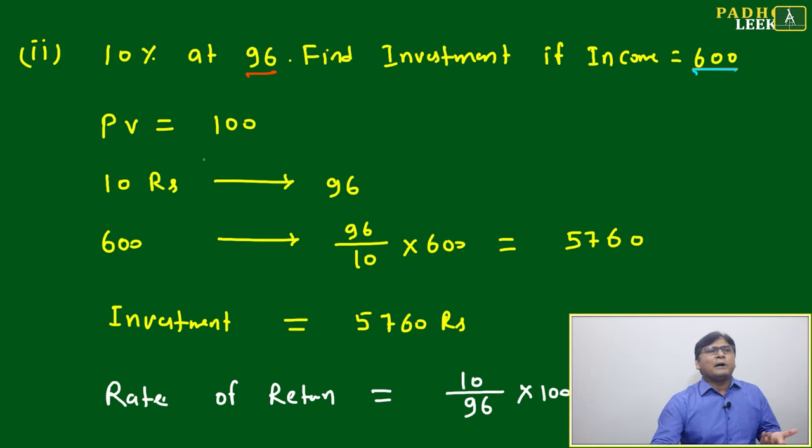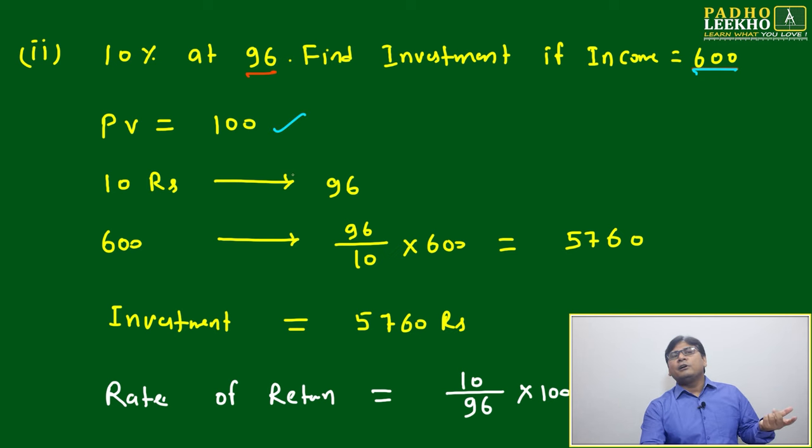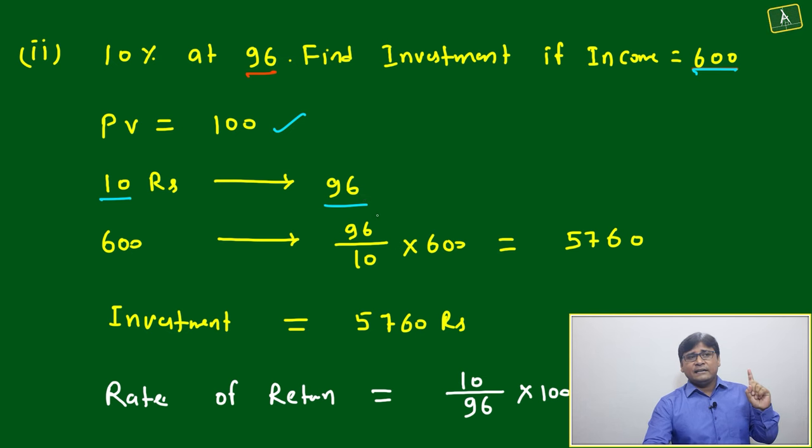Face value and par value are not given, so we assume 100. This means for every 10 rupees dividend, you're investing 96 rupees. One share is purchased at 96, and the dividend per share is 10% or 10 rupees.